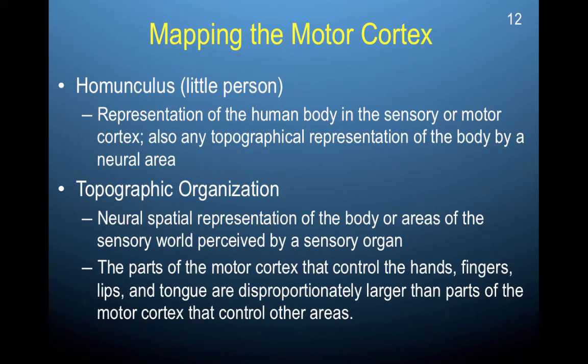In this video, I'm going to be talking about the mapping of the cortex, organization within the motor cortex, and the brain stem and spinal cord. The homunculus, which roughly translates to 'little person,' is a representation of the human body in the sensory or motor cortex — any topographical representation of the body via a neural area. Most of you have probably seen or heard of this before.